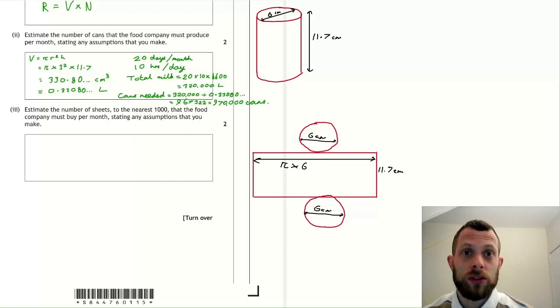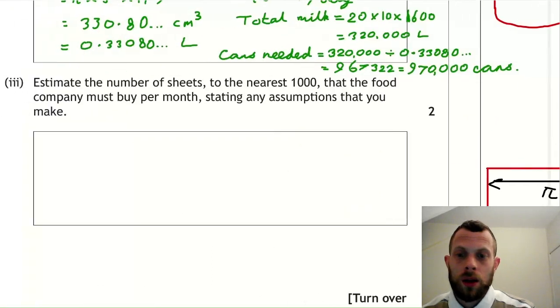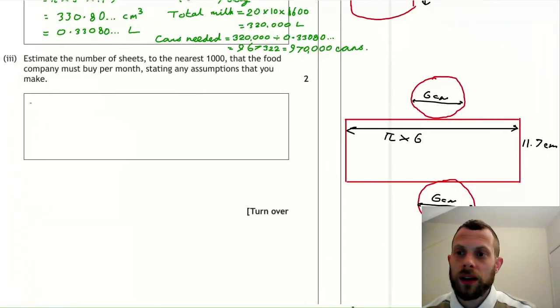And one of the dimensions would be the height of the cylinder. The other dimension would be the circumference of the circular end of the cylinder. So remember, c equals pi times d. So in our case, diameter of 6, so circumference of pi times 6. So what we'll do is work out the surface area of one cylinder. We'll multiply by the number of cans, and that'll tell us the total area of metal sheet that we need to make all of these cans.